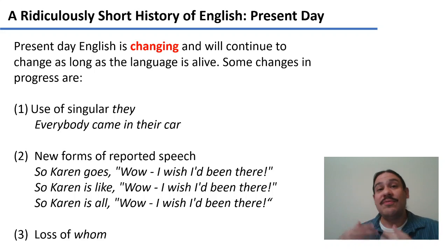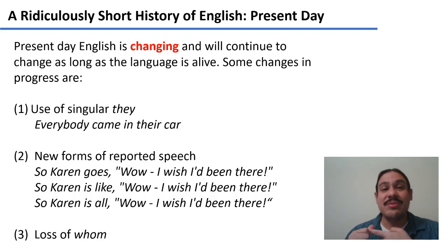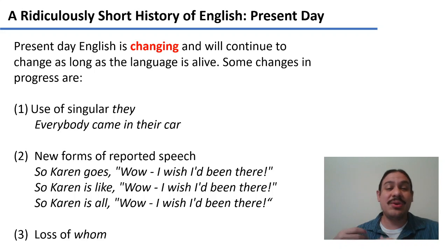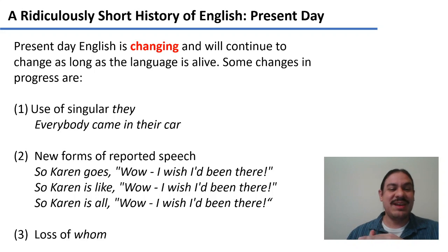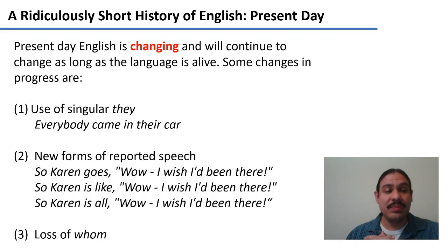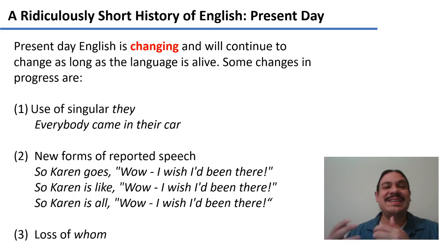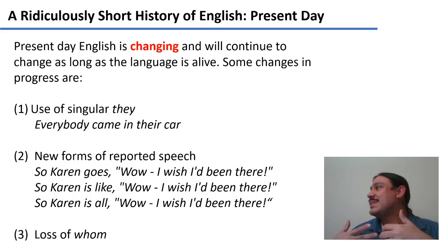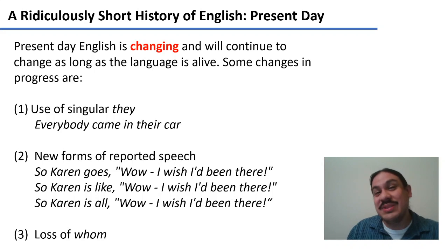There are other changes in present-day English. Before, the only way to say a quotative sentence would have been 'so Karen says, wow, I wish I'd been there.' In the early 21st century, we say things like 'so Karen goes,' or 'so Karen's like,' or 'so Karen's all.' These new quotative forms have been emerging for a while. Also, the word 'whom' - as in 'whom am I seeing' - is no longer really used. Only people who want to project an extremely pedantic persona would use that word; modern-day English really doesn't have it.